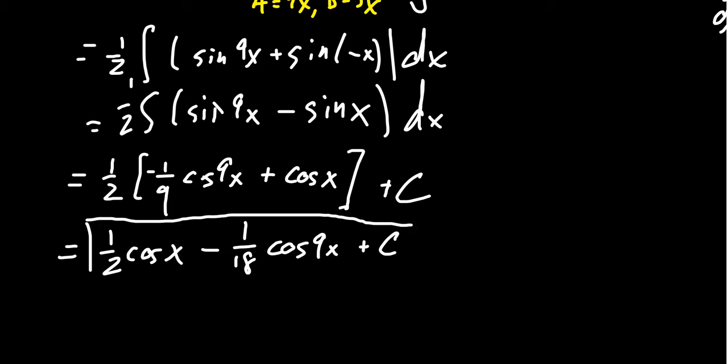And so then we found the anti-derivative. So if you ever have to integrate a product of sine and cosines and they have different angles inside, use these product-to-sum identities to help you out. And they worked out really nicely.